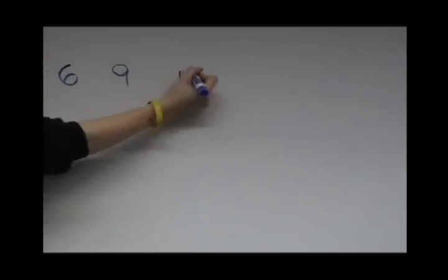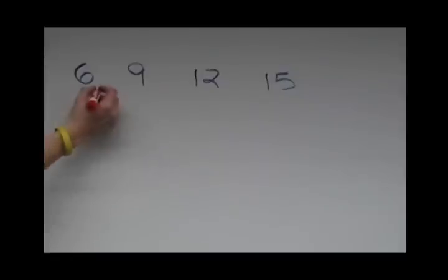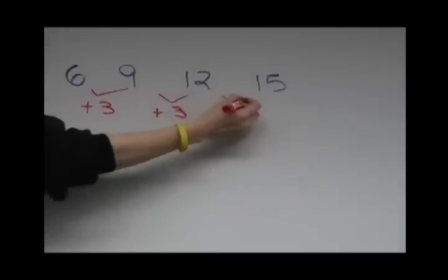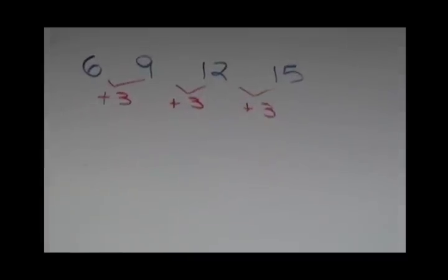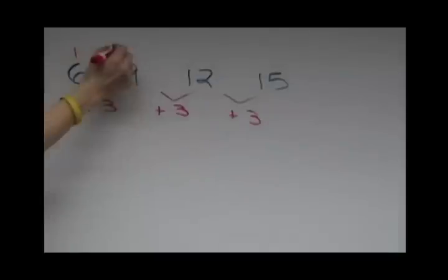When looking for a pattern in a series of numbers, the easiest thing to do is to look to see if there is a common difference between the numbers. In this case, the difference between 6, 9, 12, and 15 is 3. We can say that this series of numbers has a common difference of 3 and is therefore represented by a linear equation.